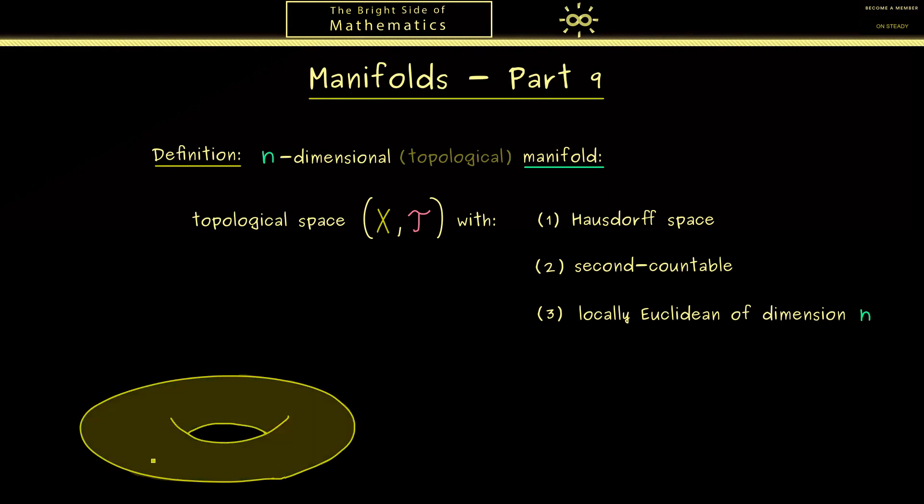As you can see, this is a donut in three-dimensional space and we want to talk about the surface of it. So the surface should be our topological space (X,T). Now on the other hand, we have the Euclidean space which is R^n. And of course, R^n should carry the standard topology given by the Euclidean metric.